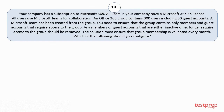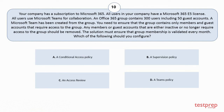Question 10. Your company has a subscription to Microsoft 365. All users in your company have a Microsoft 365 v5 license. All users use Microsoft Teams for collaboration. An Office 365 group contains 300 users including 50 guest accounts. A Microsoft Team has been created from the group. You need to ensure that the group contains only members and guest accounts that require access to the group. Any members or guest accounts that are either inactive or no longer require access to the group should be removed. The solution must ensure that group membership is validated every month. Which of the following should you configure? Your options are: A. A Conditional Access Policy. B. A Supervision Policy. C. An Access Review. D. A Teams Policy. The correct answer is Option C.